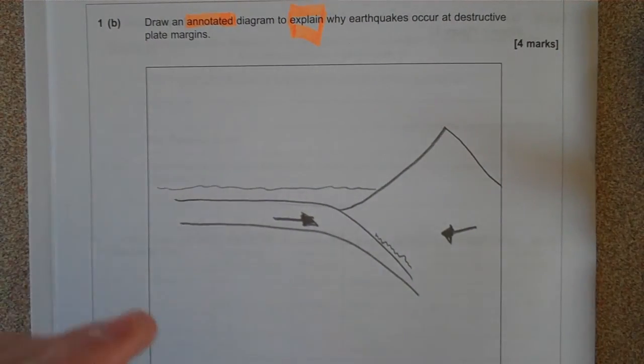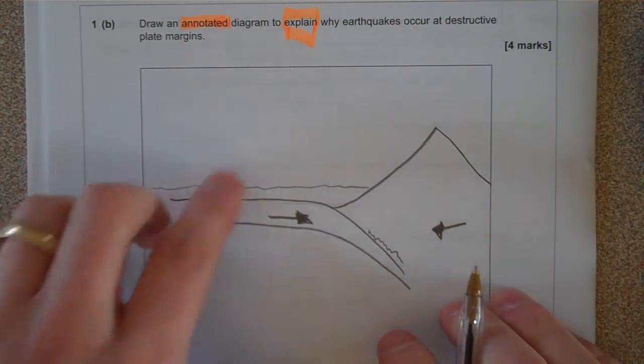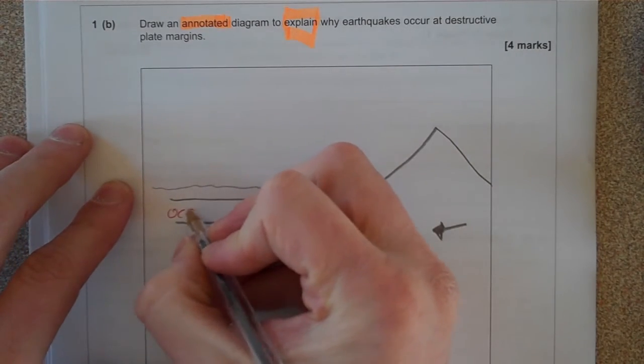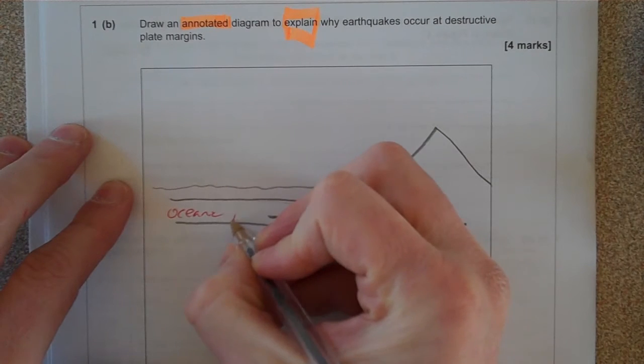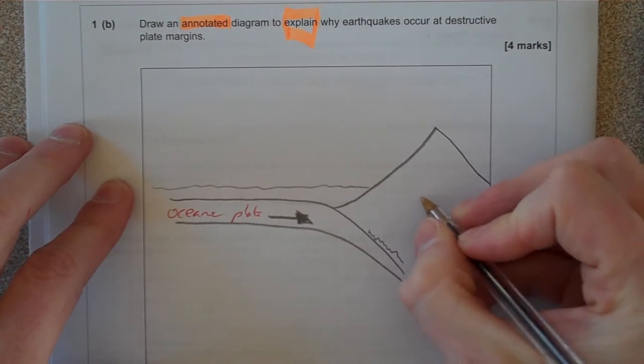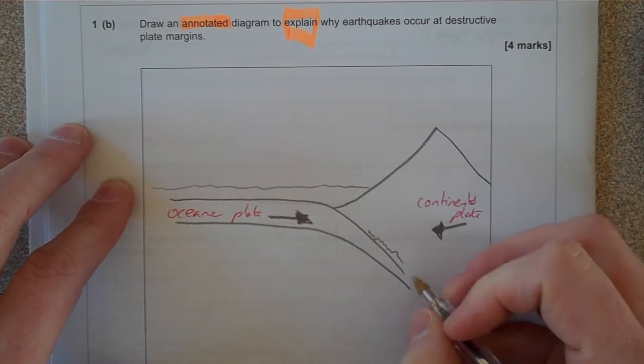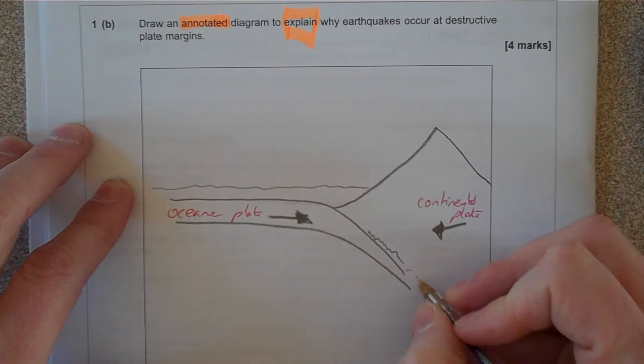Now what we've got to do is to annotate this to explain what's going on. So let's get our labels in first. Oceanic plate, continental. And then this area is called the subduction zone.